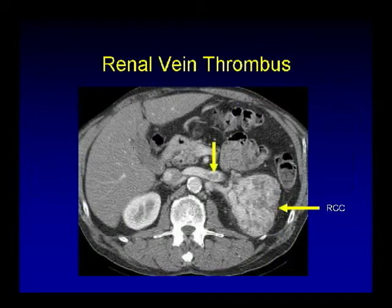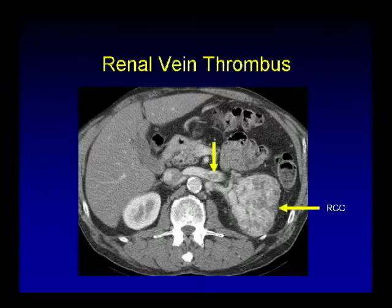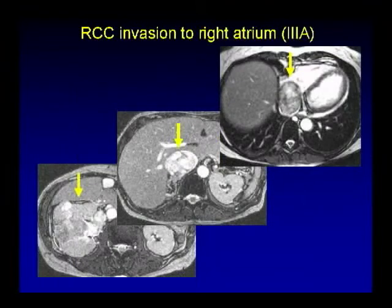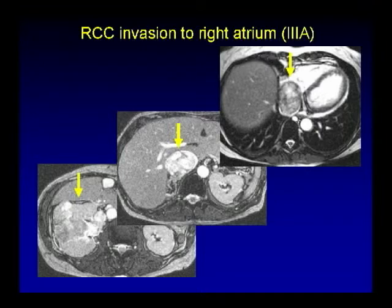Here's another CT case: solid enhancing left renal mass consistent with RCC, and the left renal vein tumor thrombus — again renal vein invasion. Here's an example on MR of right renal cell carcinoma, and then tumor thrombus in the IVC extending all the way into the right atrium. It's important to let your surgeons know because the surgical management is different.